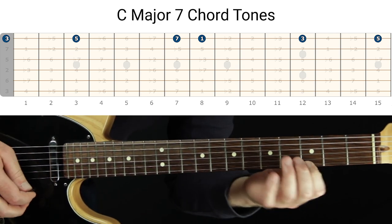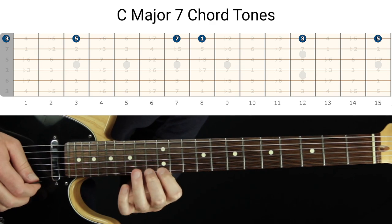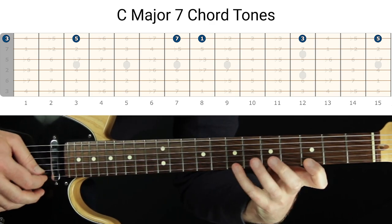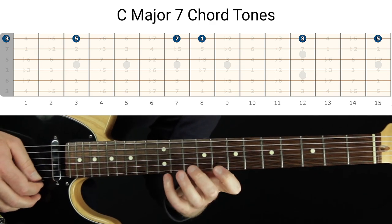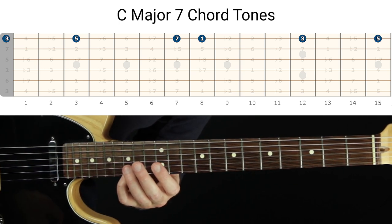We're gonna do C major seven. Here's the five, here's the major seven, here's the root, here's the three, here's the five, mapping out the chord tones. That was our step one that we've been doing.